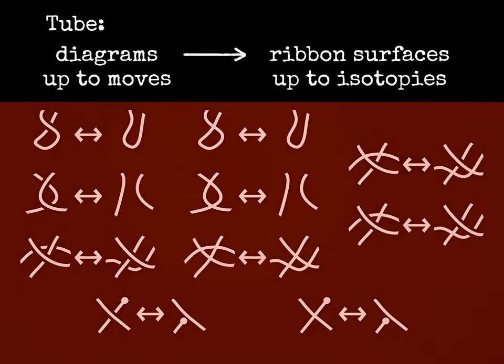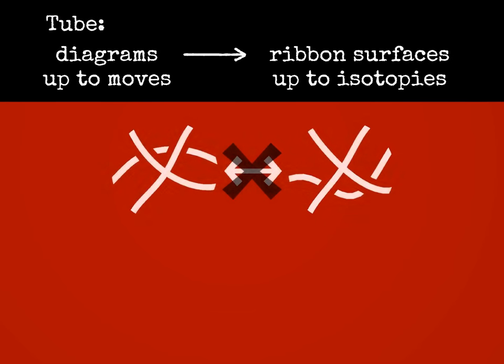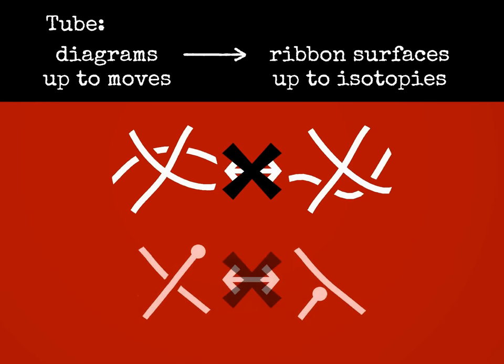It is easier to state the forbidden moves. A strand cannot pass below a virtual crossing, and a cup cannot pass over a strand.